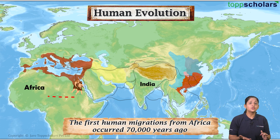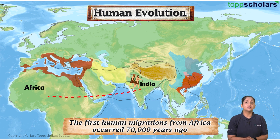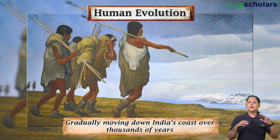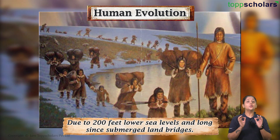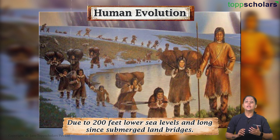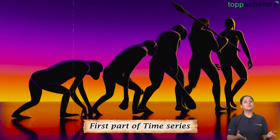The first human migrations from Africa occurred 70,000 years ago, gradually moving down India's coast over thousands of years, due to a 200-foot lower sea level and long-since submerged land bridges. With this, we have come to the end of the first part of the series.